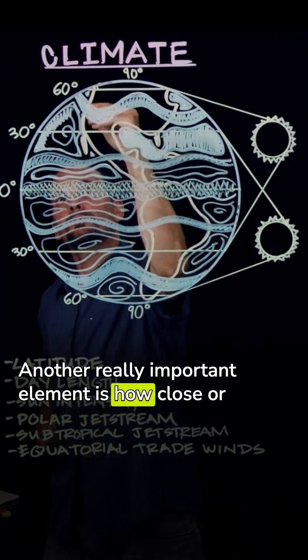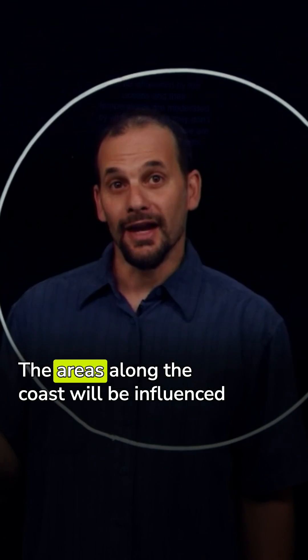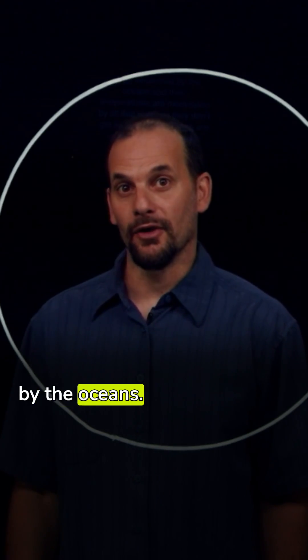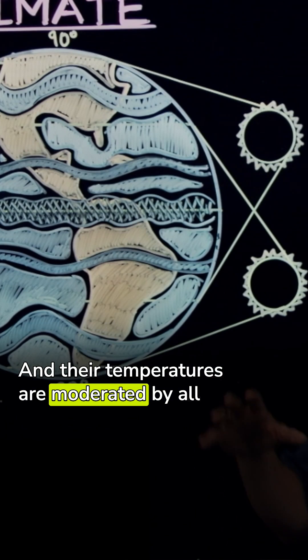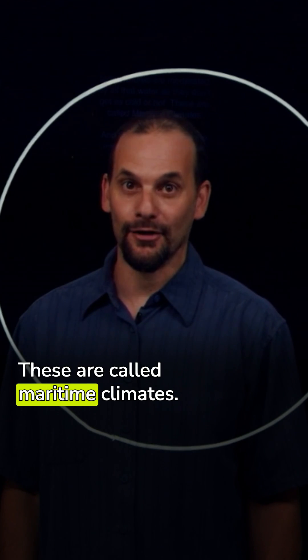Another really important element is how close or near you are to oceans or large bodies of water. The areas along the coast will be influenced by the oceans and their temperatures are moderated by all that water. They don't get as cold or hot. These are called maritime climates.